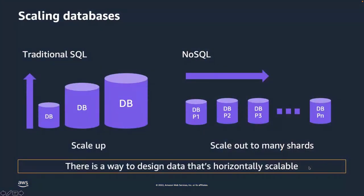NoSQL delivers on the promise of massive scale by using horizontal scaling, where data and workload are partitioned over a number of shards which can grow as data volume and throughput grows. Scaling is incremental — more nodes or partitions are added as needed. Typically, nodes are inexpensive, smaller commodity servers, and scaling is nearly linear. The basic premise is the same for all NoSQL databases: there is a way to shard data, and it is horizontally scalable.